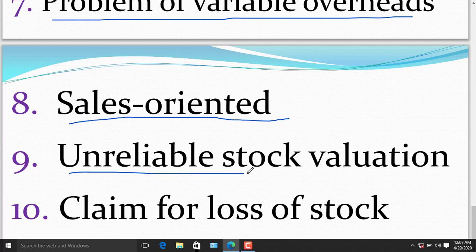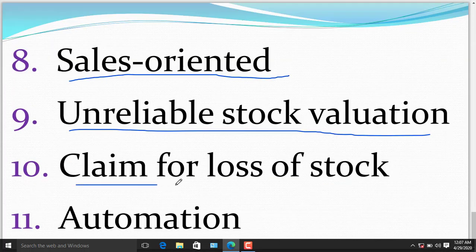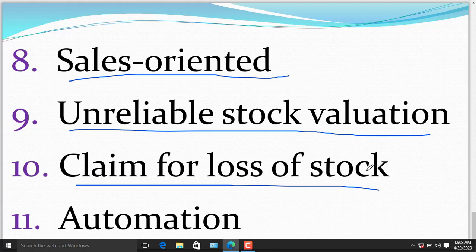The ninth point of limitation in marginal costing is unreliable stock valuation. Under marginal costing, stock of work in progress and finished stock is valued at variable cost only, and no portion of fixed cost is added to the value of stocks. Profit determined under this method is depreciated. The tenth limitation of marginal costing is claim for loss of stock. Insurance claim for loss or damage of stock on the basis of such valuation will be unfavorable to businesses, because we cannot consider the fixed cost. Whether it has defected or has some problems, we cannot evaluate that, so the business will get unfavorable results from these claims.